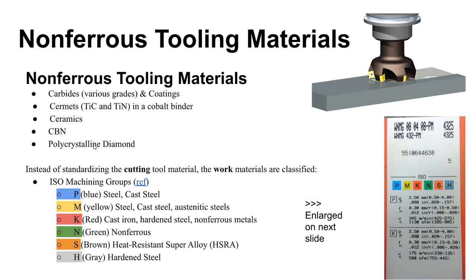If you go along the spectrum starting with high-speed steel and moving toward polycrystalline diamond, you're increasing in hardness and decreasing toughness. You have to lower the feed rate as you move down that column, but you can increase the cutting speed significantly. The non-ferrous tooling materials include carbides, then cermets, then pure ceramics — which are basically titanium carbide and titanium nitride. Tungsten carbide is a ceramic material, but since it's such a large group it's classified by itself.